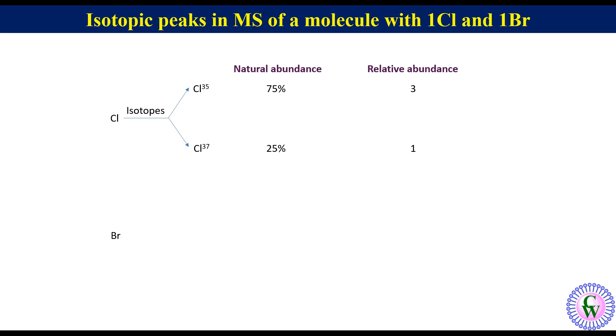Bromine has two isotopes Br-79 and Br-81. Their natural abundance is 50:50, or we can say that the relative abundance of Br-79 and Br-81 is 1 to 1.